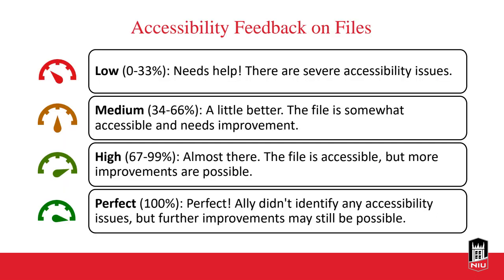This is what the gauges mean — feedback on our files. The red gauge means low accessibility: 0 to 33% according to the algorithm. This really needs help; there are severe accessibility issues and the content may not be accessible to students with disabilities. Medium is 34 to 66% — somewhat accessible but needing improvement. High accessibility is 67 to 99% — almost there, accessible but with more improvements possible. And then 'perfect' is 100%: Ally didn't identify any accessibility issues, but further improvements may still be possible.